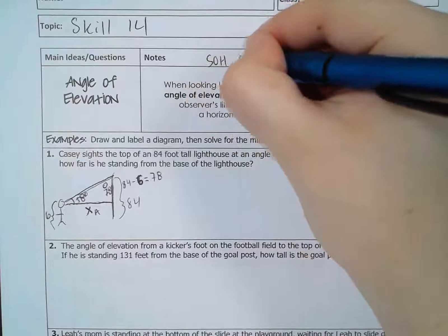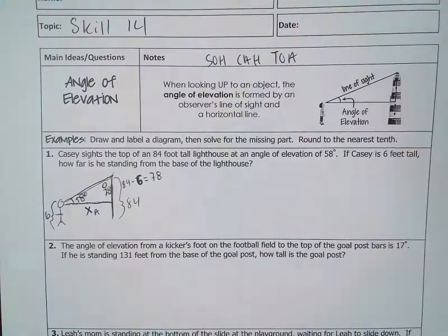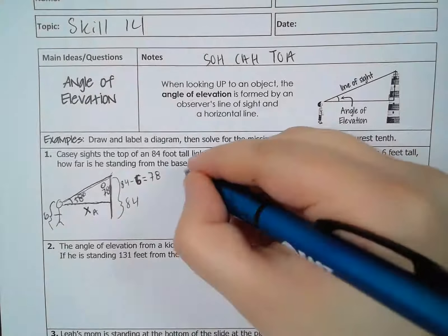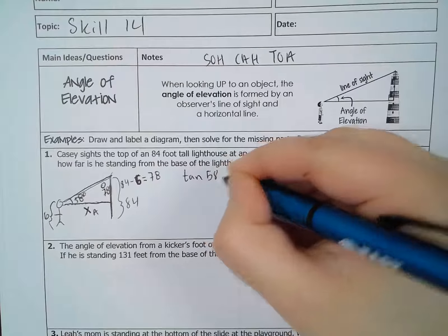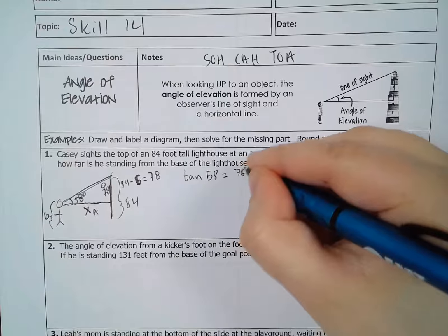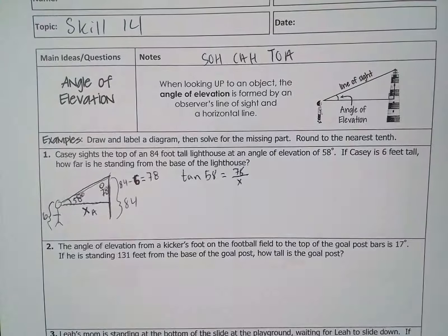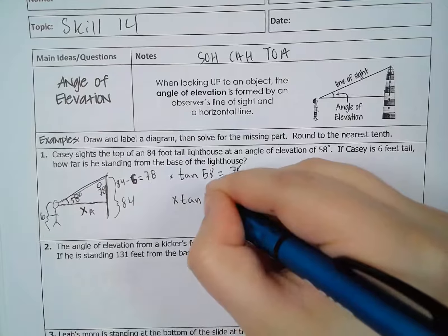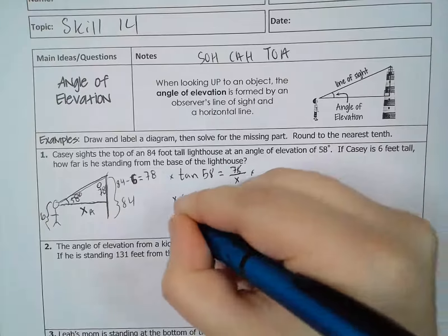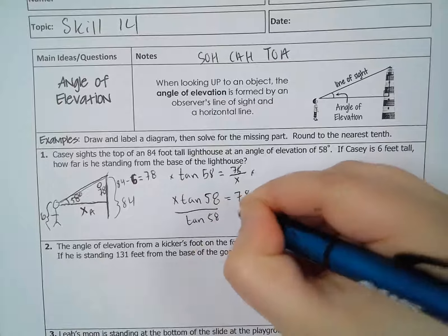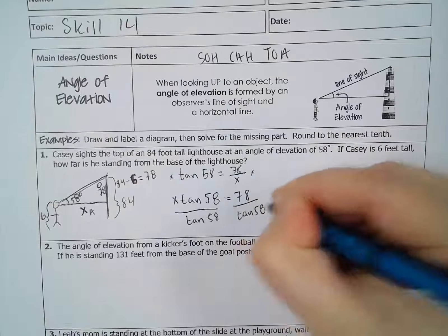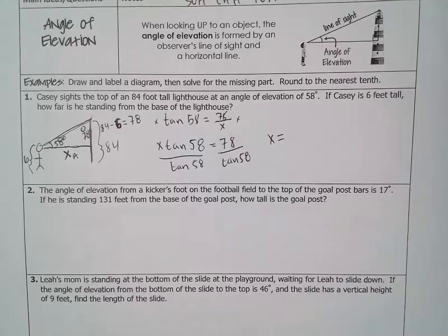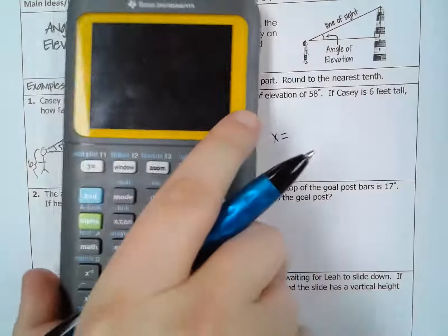I forgot to write down SOHCAHTOA. When I have opposite and adjacent, I have tangent. Tangent of 58 degrees equals the opposite over the adjacent. I'm going to multiply both sides by x: x times tangent of 58 equals 78. Then I divide both sides by tangent of 58, and I get x equals 78 divided by tangent of 58.